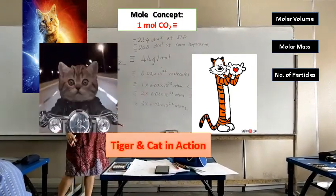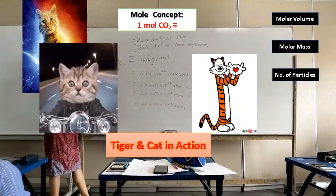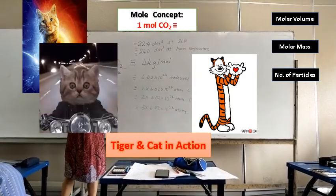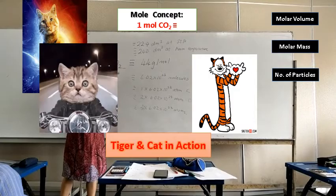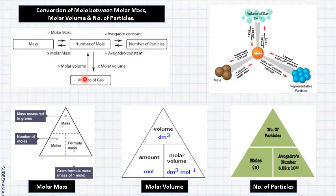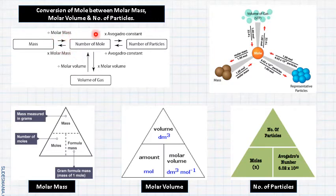Many of you may not fully understand this concept, but you need to solve problems using stoichiometry. Now let's start to solve mole concept problems using stoichiometry. This diagram shows the conversion of mole between molar mass, molar volume, and number of particles. You always apply this kind of formula during secondary school. If you want to find moles, you divide by molar mass, by Avogadro's number, and by the molar volume — either at STP or room temperature. This concept is still correct.